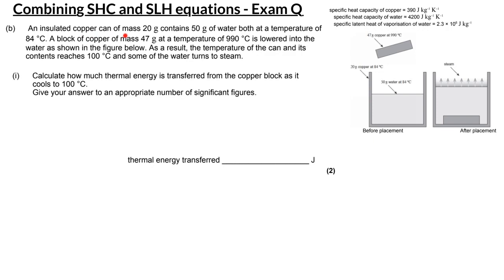We have a copper can of mass 20 grams with 50 grams of water inside it, and both the copper can and the water are at 84 degrees Celsius. We then drop in a block of copper which is 47 grams and is at 990 degrees Celsius. It heats up the water and the copper can until everything — the can, the water, and the copper block — all reach 100 degrees Celsius. There is then still some energy given to the water to cause some of that water to evaporate as steam.